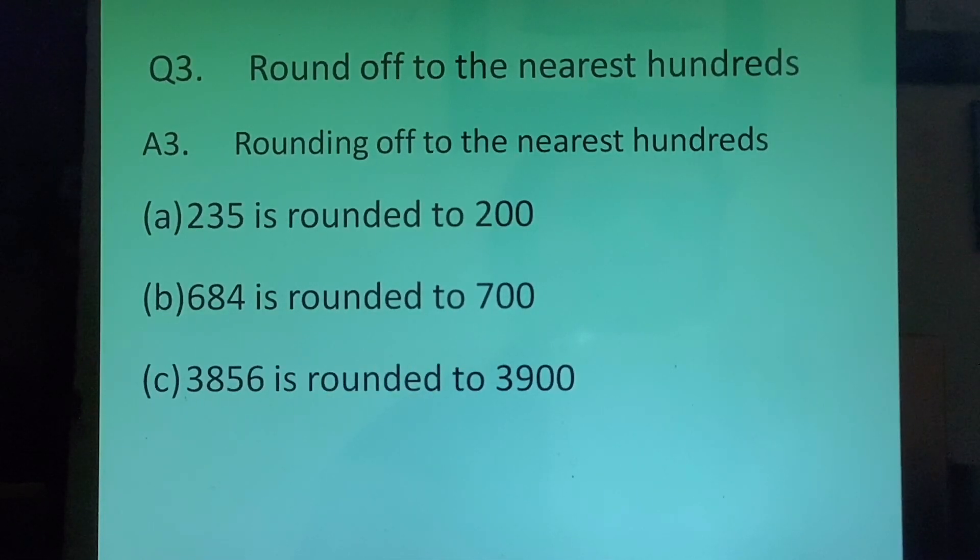C part 3856. We will check 5. 5 is always rounded off to the upper limit. Therefore the 8 at the hundreds place will become 9. The answer will be 3900.